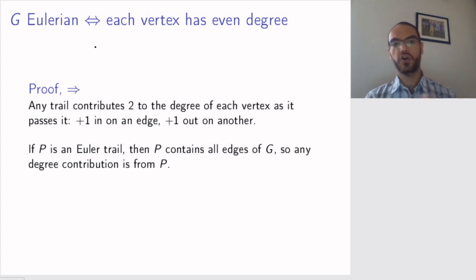If now you have an Euler trail, then the Euler trail contains all the edges of the graph. So if a vertex has a certain degree, then this whole degree comes from edges that are included in this trail. But we just said that the trail contributes 2 to each vertex it passes.